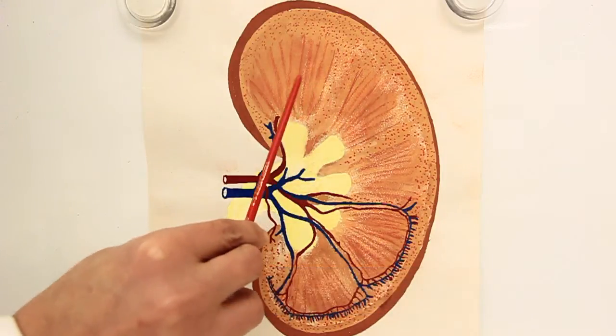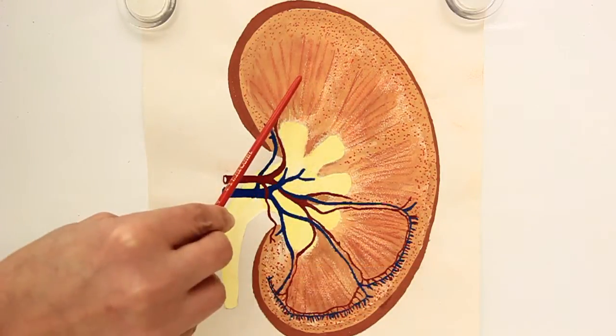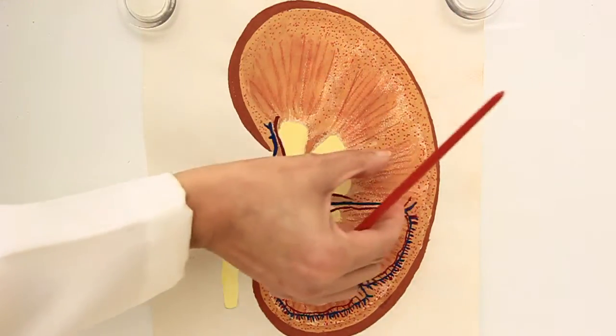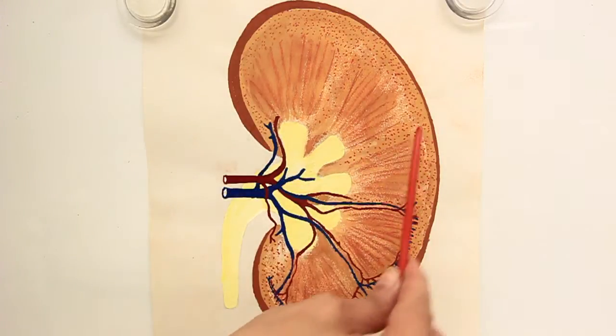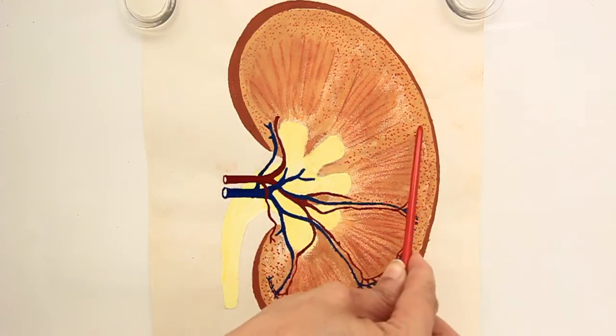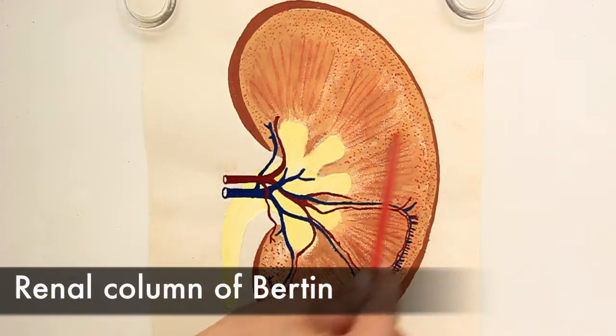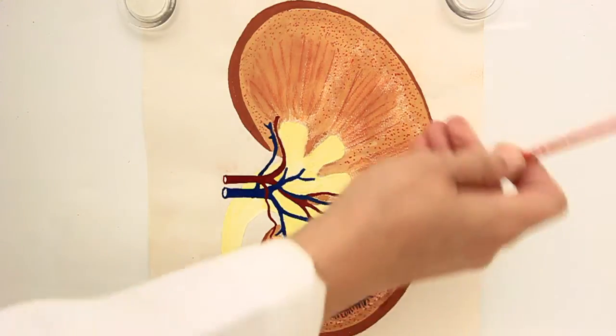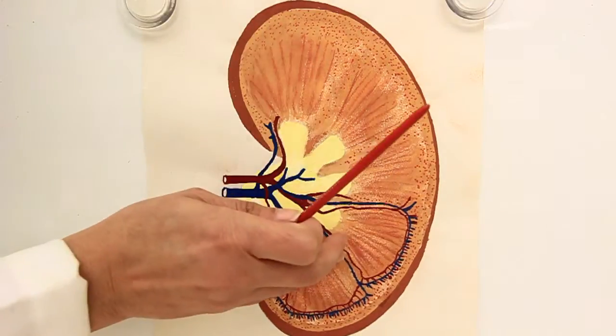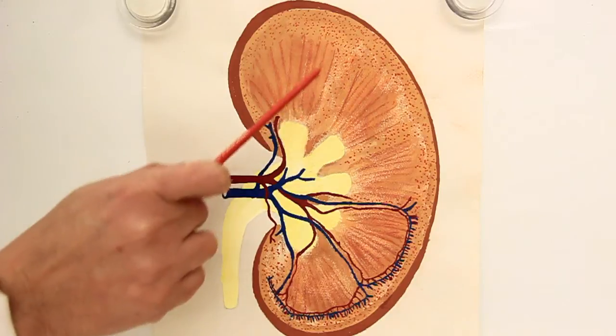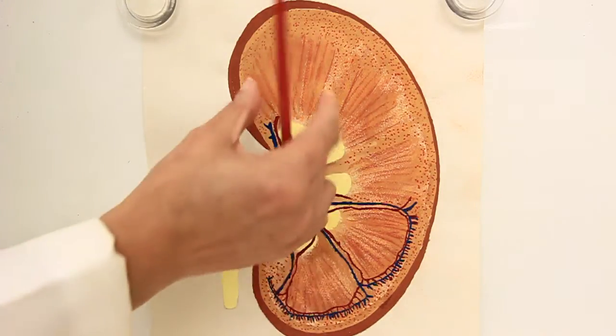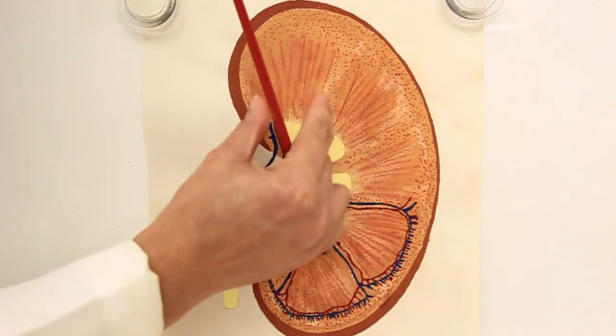You can see that the substance of medulla has been divided into pyramid shaped smaller regions by the downward extension of cortical tissue. They are known as the renal column of Bertin. So renal columns of Bertin are nothing but the downward extension of cortical tissue within the substance of medulla. They divide the medulla into almost five to eight distinctly visible pyramid shaped regions.